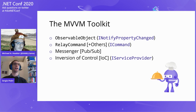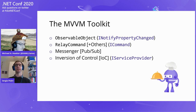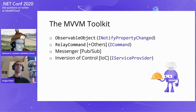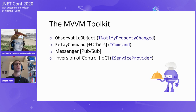Here we can see how the actual MVVM Toolkit is structured. It's composed of a number of building blocks organized around four main categories. The idea is that for the most part, all the various APIs in these four categories would not rely on any of the other APIs in the other categories, making it very easy to pick and choose the individual components you need. These four main categories relate to things such as relaying property change notifications, commands, message broadcasting, and inversion of control.